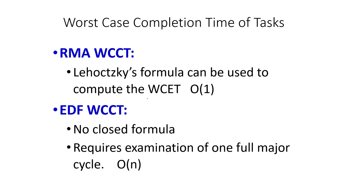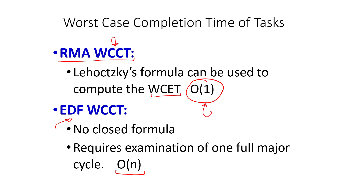Regarding worst case completion time — WCCT — we use Lehocsky's formula to compute the worst case completion time, also known as worst case execution time, which takes O(1) time. It is a simple formula to compute the absolute worst case for RMA. For EDF, there is no closed formula; it requires examination of one full major cycle, defined as the LCM of the periods, taking roughly O(n) time — computationally heavy compared to RMA.